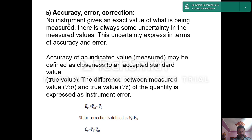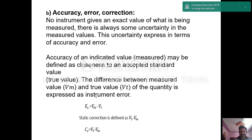No instrument gives the exact value of what is being measured — there is always some uncertainty in the measured value, expressed in terms of accuracy and error. Accuracy is defined as the closeness to an accepted standard, i.e., the true value. The difference between measured value (Vm) and true value (Vt) is expressed as instrument error: Error = Vm − Vt.